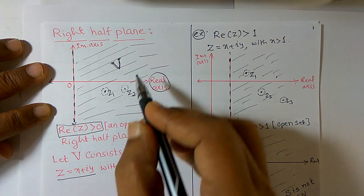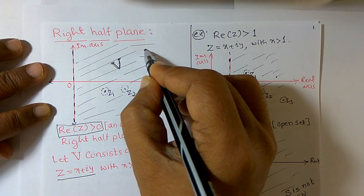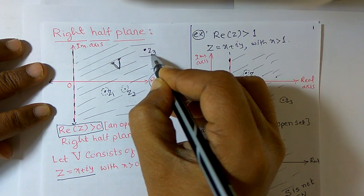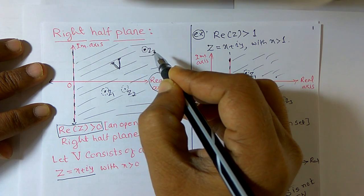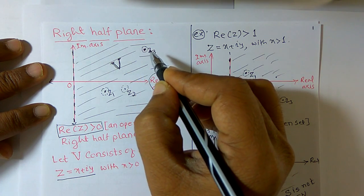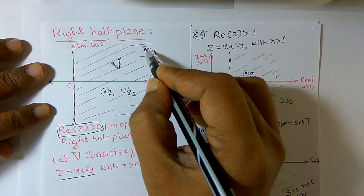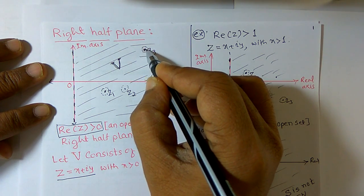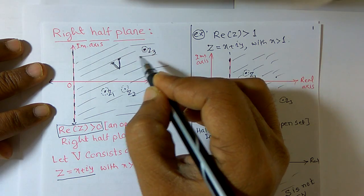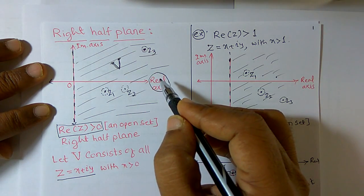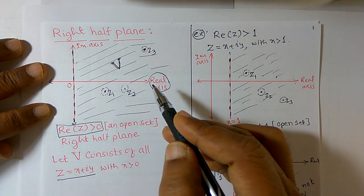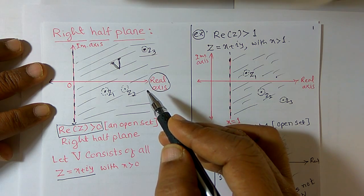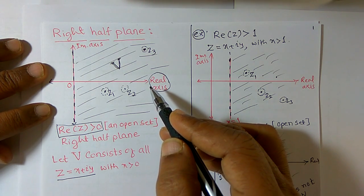Not necessarily z1 and z2 — you can take another complex number, say z3. Construct an open disk around z3. It is also containing some points, and all those points belong to V. Therefore, V is an open set.